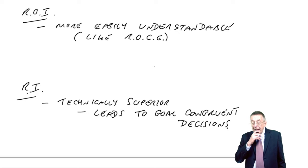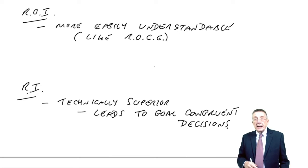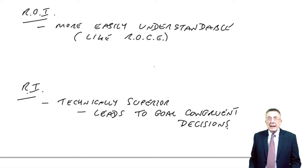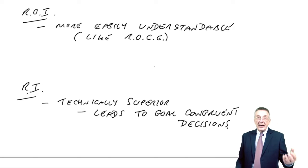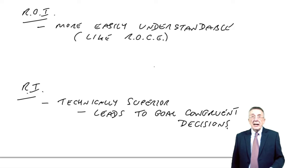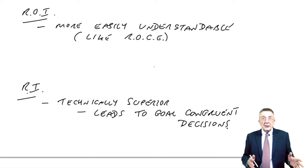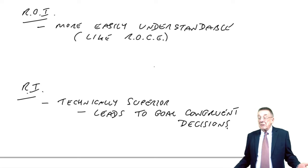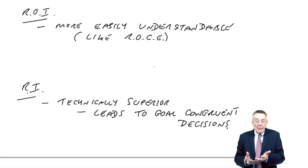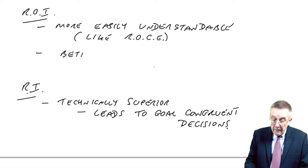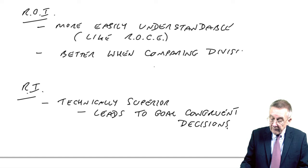But a couple of other things. What can be a problem with residual income is when you're comparing divisions — not all divisions are going to be the same size. Some divisions might be very small, with small investment and small profitability, while another division is much bigger. The trouble with residual income is that one division might have a residual income of 1,000 and be terribly profitable in terms of percentage, while another division is 20 times bigger and has a residual income of 5,000 — it's not really valid to compare them. So if you're comparing divisions, return on investment does make more sense; it's better when comparing divisions of different sizes.